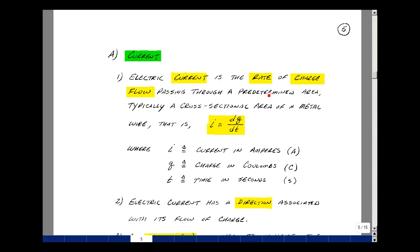Electric current is the rate of charge flow passing through a predetermined area, typically a cross-sectional area of metal wire. That is, current is the change in charge over the change in time. If you take the limit as the change in time shrinks, this becomes the definition of a derivative. I is the current in amperes, Q is the charge in coulombs, and T is time in seconds.